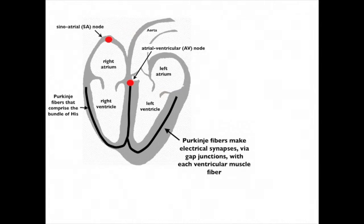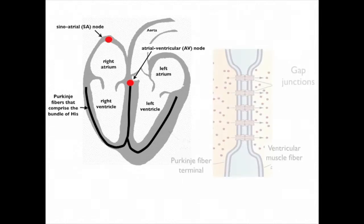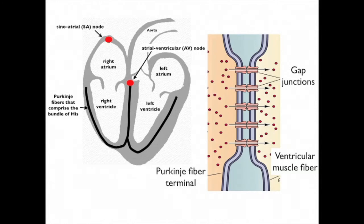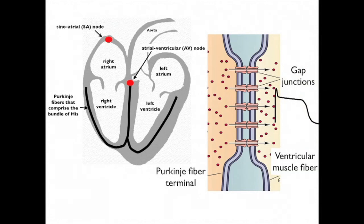The bundle of His is composed of fibers called Purkinje fibers that have very rapid conduction velocities. The Purkinje fibers in the bundle of His make electrical synapses via gap junctions with each ventricular fiber and thereby simultaneously excite all of the ventricular fibers. The currents generated by the action potentials in the Purkinje fibers pass through the gap junctions and evoke cardiac action potentials in each ventricular muscle fiber, thereby causing the ventricles to contract strongly and synchronously. It is the strong synchronous contractions that provide the muscular force that pumps blood under high pressure throughout the entire body.